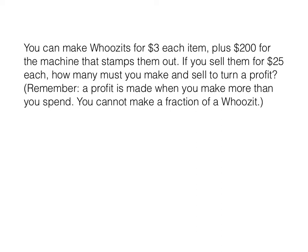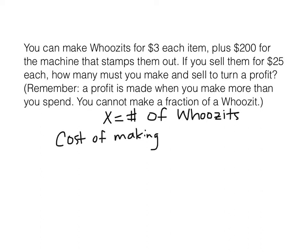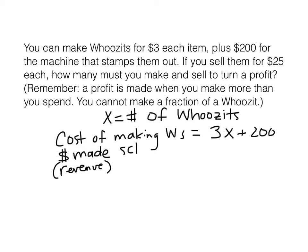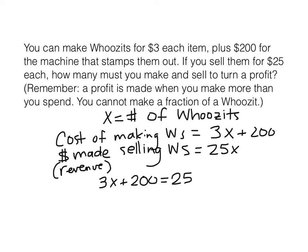We're going to make X number of who's-its. We have the cost of making them — I'll put W's because I don't want to write out who's-its again — which is $3 per who's-it plus $200 for the machine. And the money made, or revenue — money made selling who's-its — is $25 per who's-it. We want to know when you break even; that's when the cost equals the sales or the revenue.